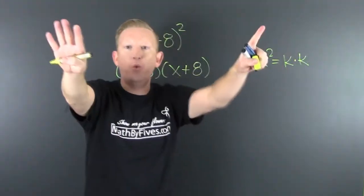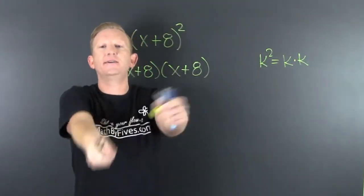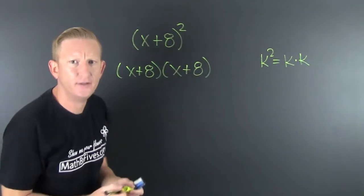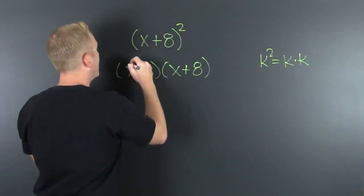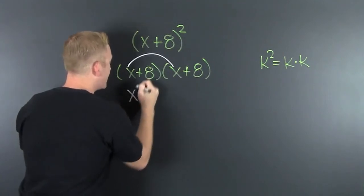Wait! What? First, inner, outer, last. Foil! Ha ha! Foiled again! So then, we're gonna first. Boom! That's an x squared.